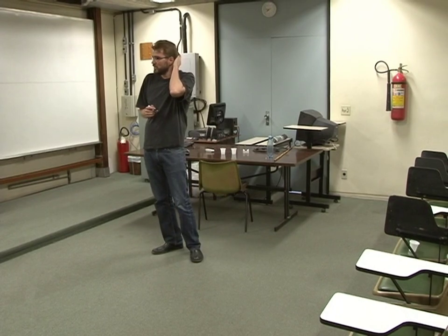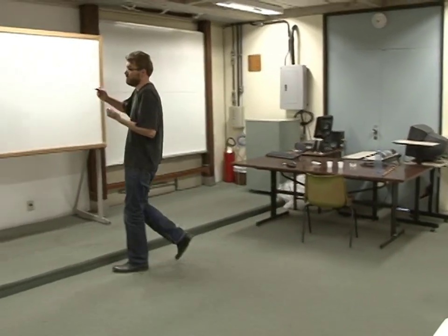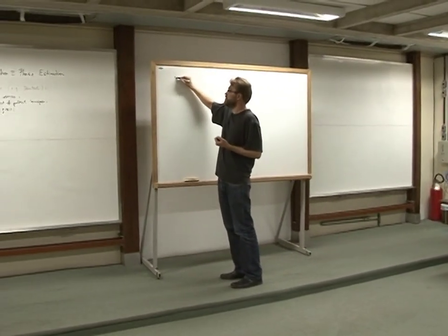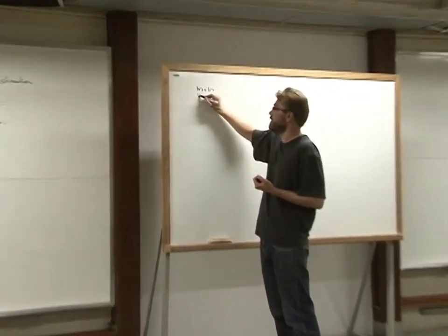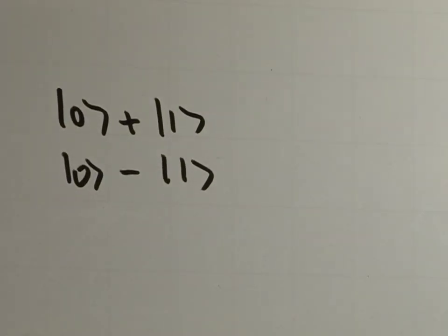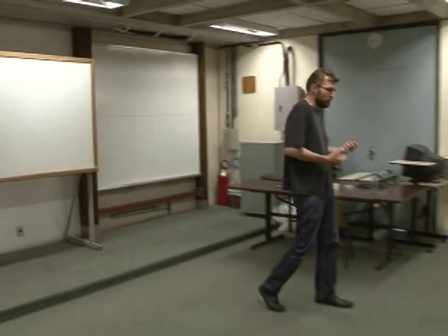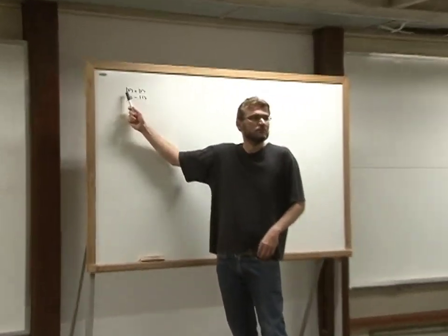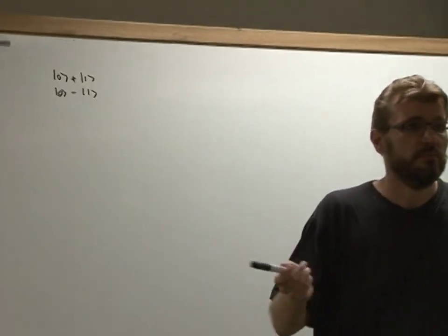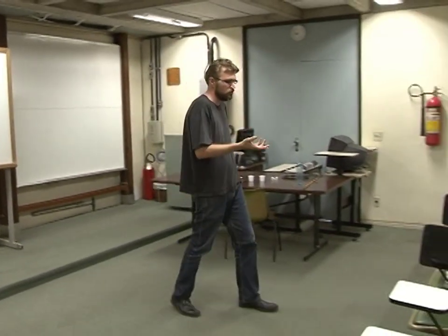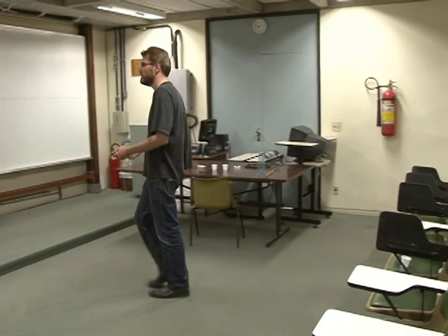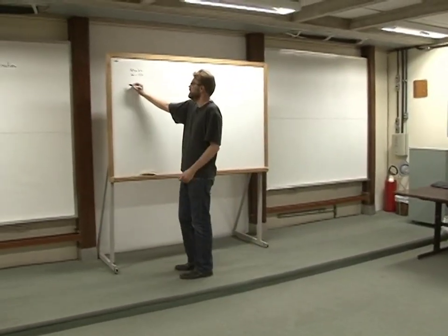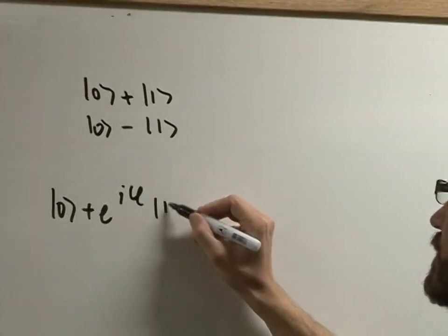In Deutsch's algorithm, you're discriminating two different states: |0⟩+|1⟩ and |0⟩−|1⟩. These are orthogonal states — in the interferometer, the two paths are the two different parts. Same phase gives one case, opposite phase gives the other. These are the two cases A and B in Deutsch's algorithm. Of course, you can ask: what if I give you a more general phase? How do I find the algorithm for that?